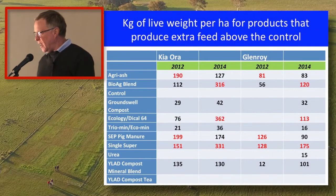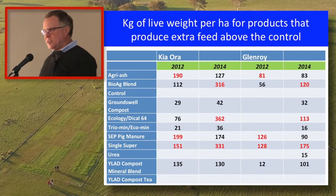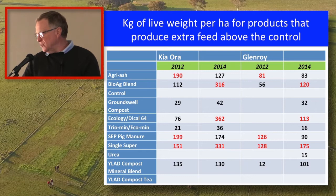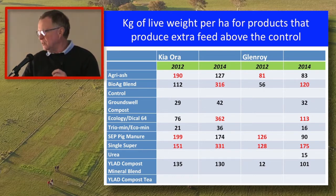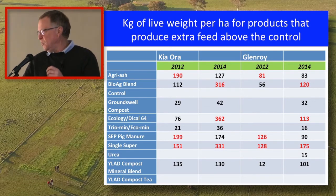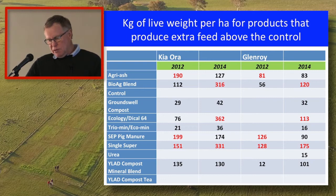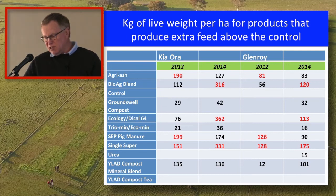Taking the lamb growth rate data, we now take account of how much extra pasture those plots grew. What we've got here is the kilograms of live weight per hectare that the various products have produced. You'll notice there are a whole heap of gaps in that table — because those products in those years did not grow more than the controls, so they drop out of the system. We see a similar trend: one product is there four times, a couple of products there twice, and the same products keep coming to the top.